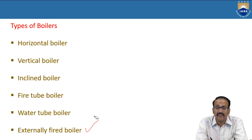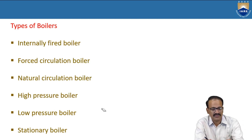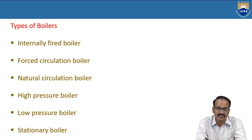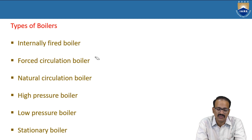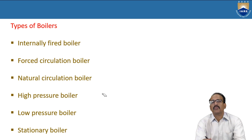In the externally fired boiler, the water will be inside and fire will be surrounding — it is externally fired. Similarly, the reverse is internally fired. There are also forced circulation boilers, where we use a pump, and natural circulation boilers, where we do not use a pump. Then there are high pressure and low pressure boilers, and stationary boilers.